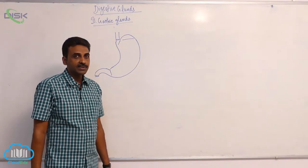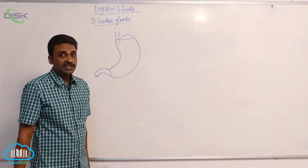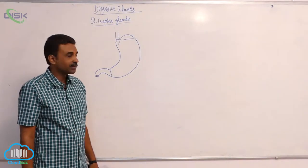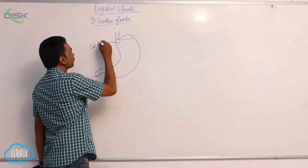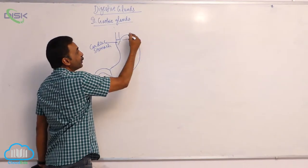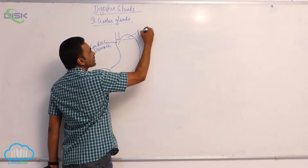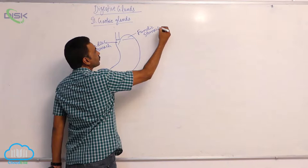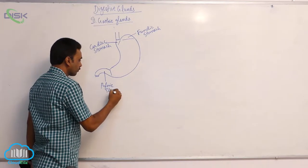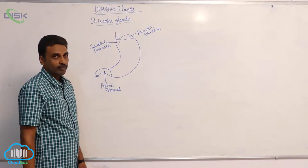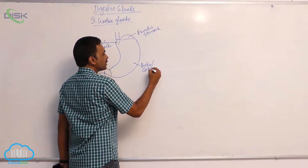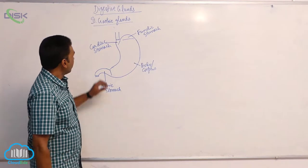The second type of digestive glands are gastric glands. This is the structure of the stomach — we already discussed this. This area is the cardiac stomach, and this elevated dome-like structure is called the fundic stomach. This area is the pyloric stomach, and this is the body or corpus of the stomach.